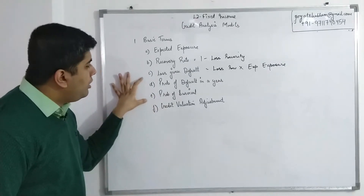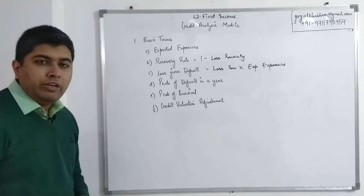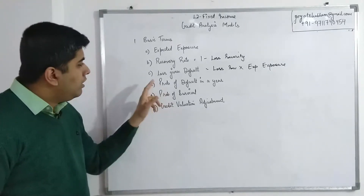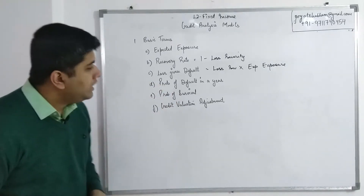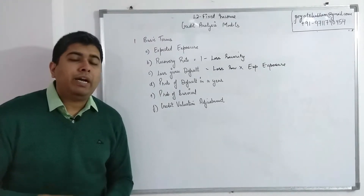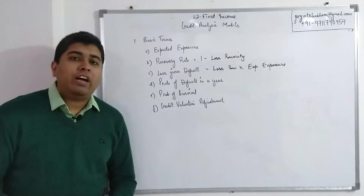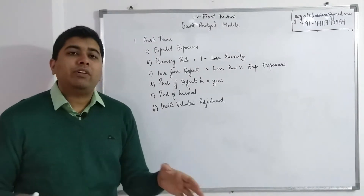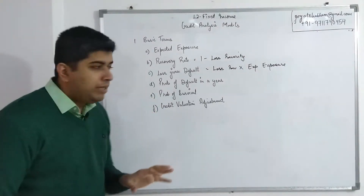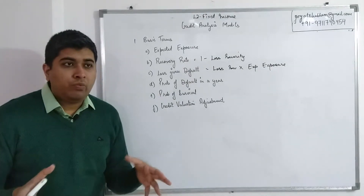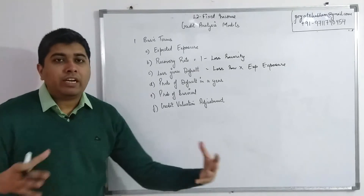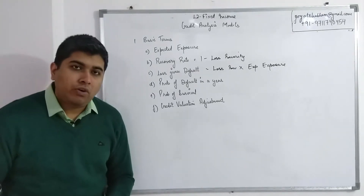The second element focuses on what are the chances of the counterparty committing a credit default during a year or over a longer time period. So we have probability of default in a year and probability of survival — both are opposite of each other. Probability of default in a year is the chance that a company might commit a credit event during the given financial year. Probability of survival is the chance that the company would not commit any credit event and would survive the entire year without any credit default.